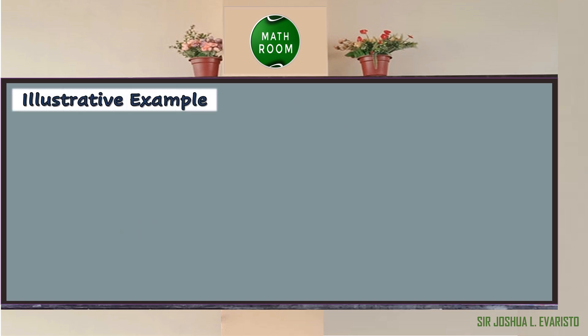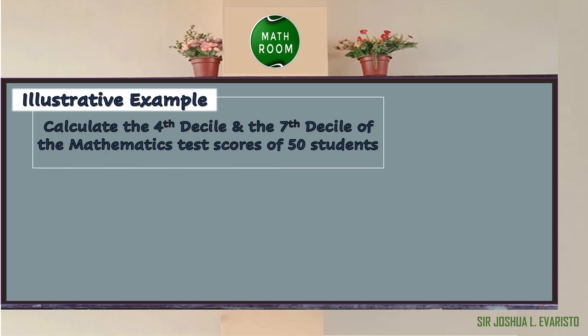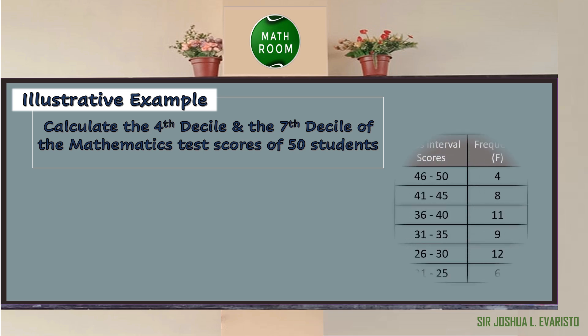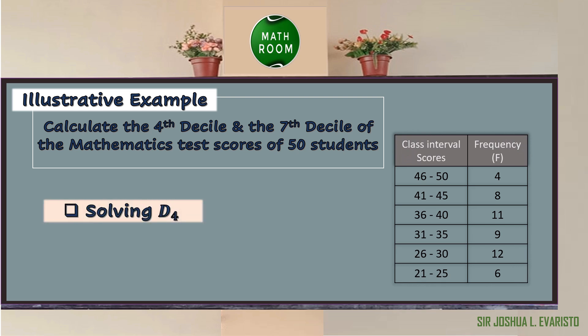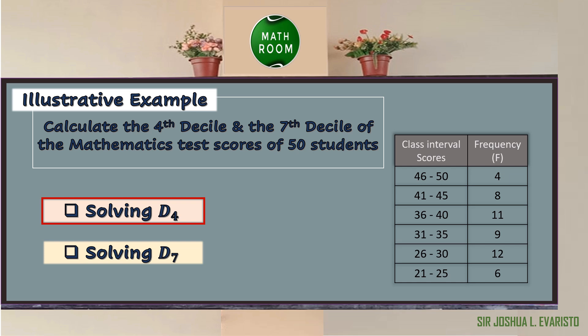For you to understand this, let's have an illustrative example. Calculate the 4th decile and the 7th decile of the mathematics test scores of 50 students using the given frequency table. We will solve D sub 4, the 4th decile, followed by D sub 7, the 7th decile. Let's start solving D sub 4.